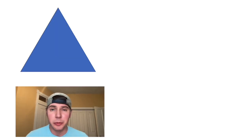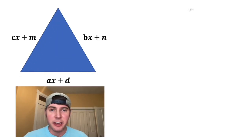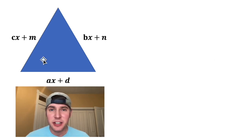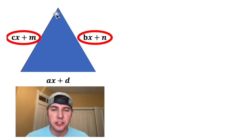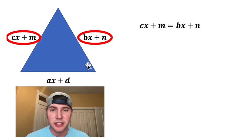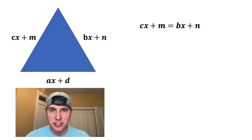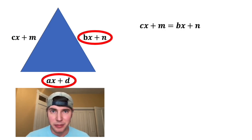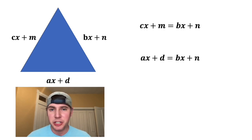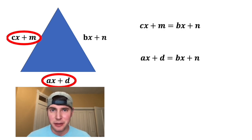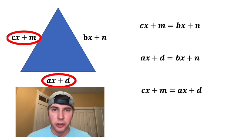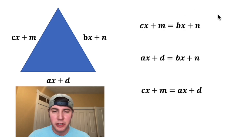First, I started with an arbitrary isosceles triangle. Then I gave each side the value of a linear expression. If it's an isosceles triangle, one possibility is these two sides are the same length, so I'm going to set these equal to each other. Another option is these two are the same length, so I'm going to set those two equal to each other. And the third option is these two are the same length, so I'm going to set those equal to each other.